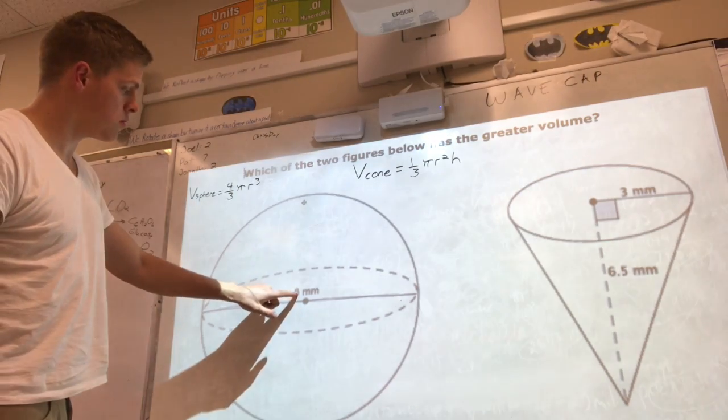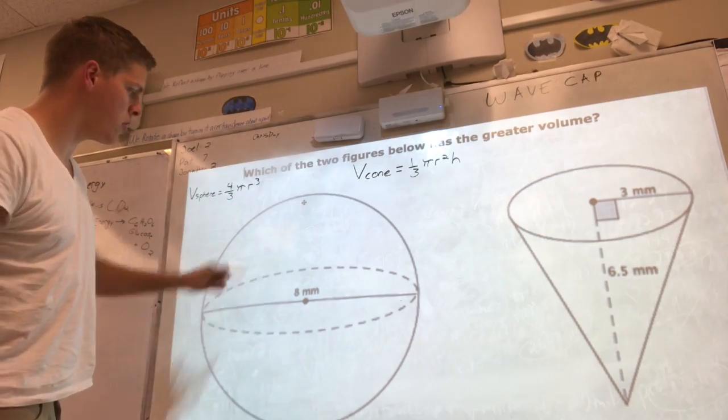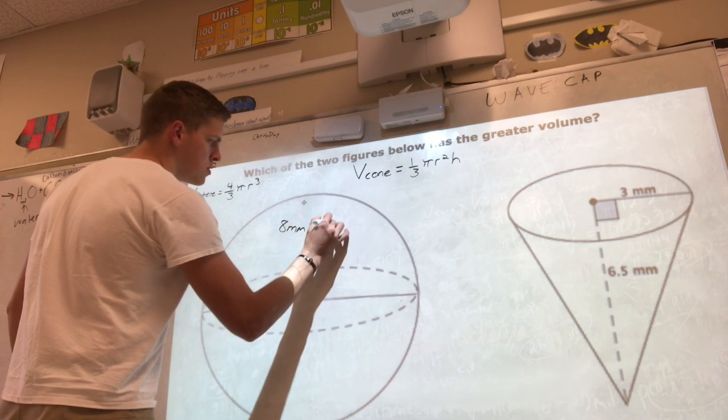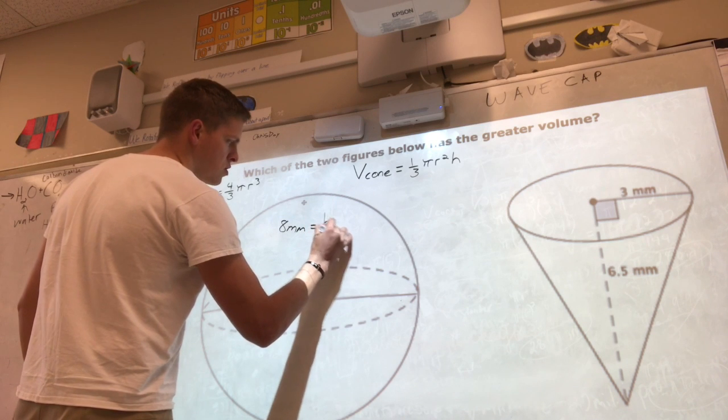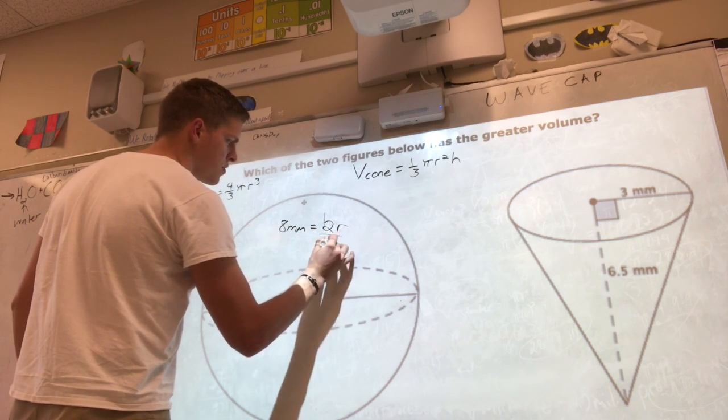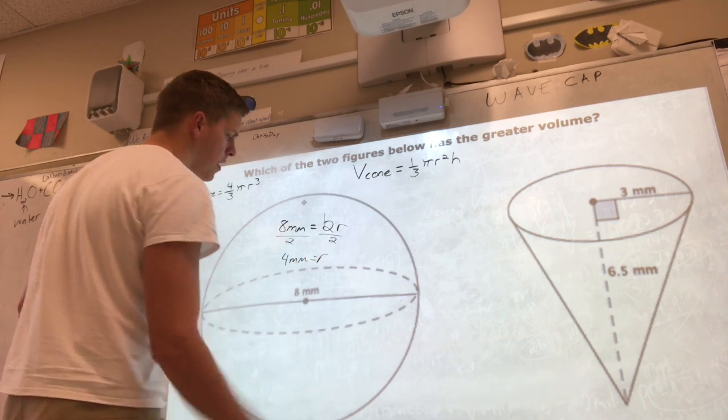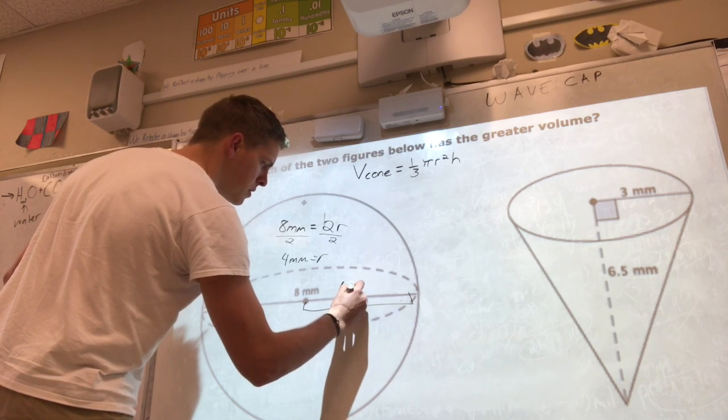So 8 millimeters, this is our diameter. It wants r, so we know that our diameter of 8 millimeters is equal to 2r. So if I divide both sides by 2, we get 4 millimeters equals r. Alright, so from here to here, 4 millimeters.